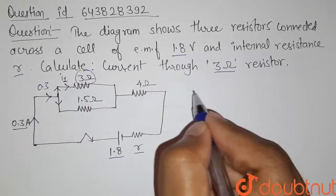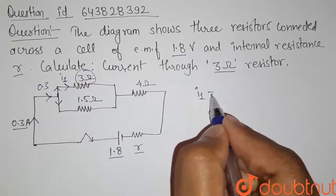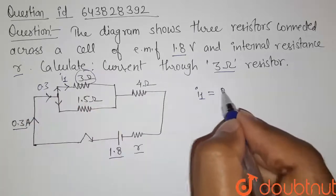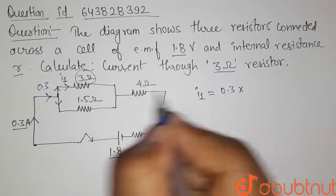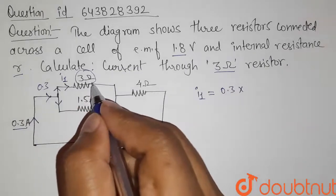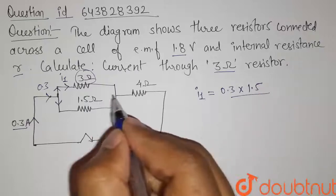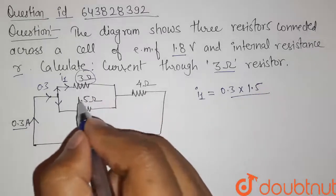Let us take it I1. So the value of I1 will be equals to the total current that is 0.3 into the equivalent resistance of opposite branch. So it is 1.5 here divided by the sum of two resistance.